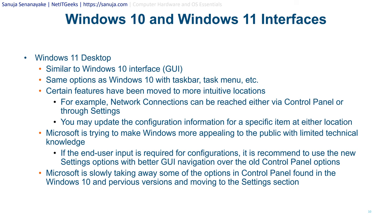Microsoft is slowly taking away some options from the control panel and moving them to the Settings sections of Windows 11. As they roll out certain updates, they might actually remove certain features completely from the control panel. In previous versions including Windows 10, all settings options could be found in the control panel. As of August 2022, you can find the same configuration options both under control panel and the Settings section, but Microsoft may slowly move those options away from the control panel and onto the Settings app entirely.